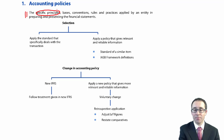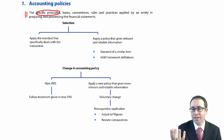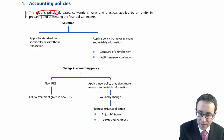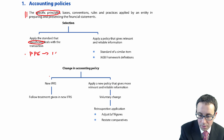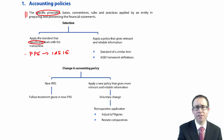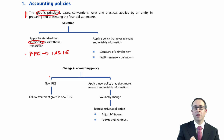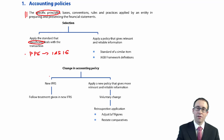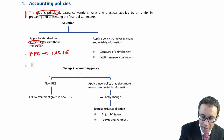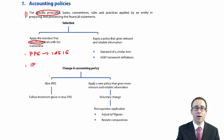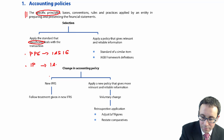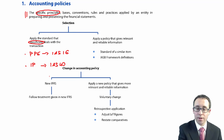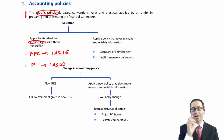In terms of how we select the accounting policy, it's logical. First, you choose the standard that specifically deals with the transaction. So if you have property, plant and equipment, you'd start with IAS 16. If you have land and buildings used in day-to-day operations — a factory, warehouse, or head office — that's IAS 16. However, if you have land and buildings held for investment purposes, i.e. capital appreciation or to rent out to other parties, then it's IAS 40. You need to be specific about which standard applies to which accounting treatment.